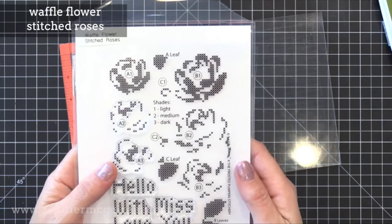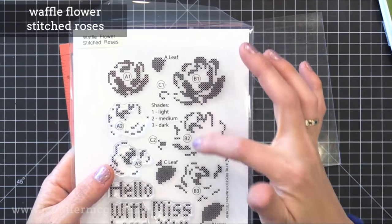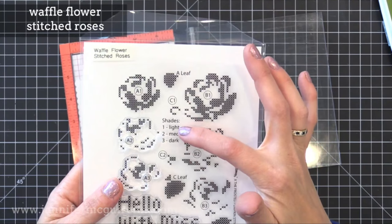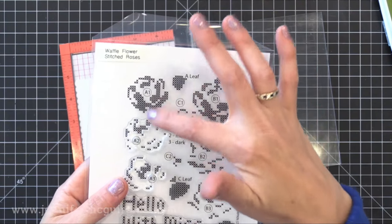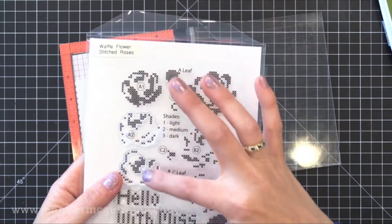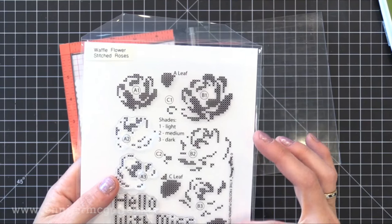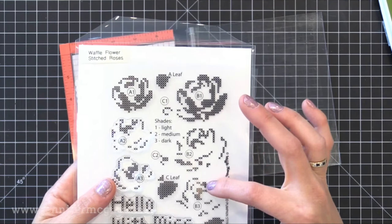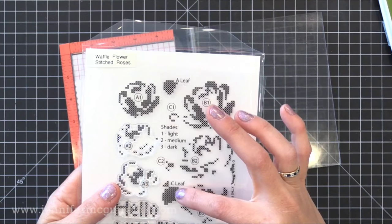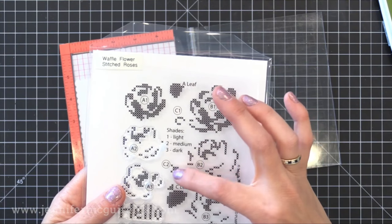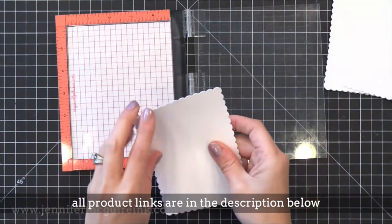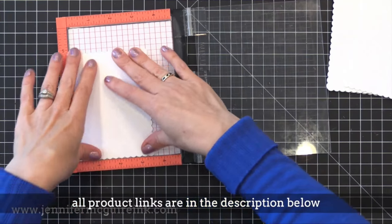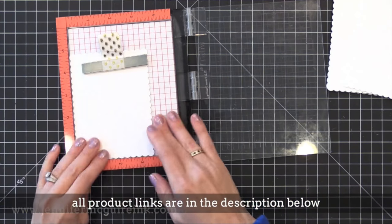I'm also using the Waffle Flower Stitched Roses stamp set. This is a fantastic layering stamp set. I like how they have it coded to tell you which images go together to layer into a flower, and which inks you should use with each of the images. There are also some leaves in here. I'm just gonna do the large flower with a few leaves.